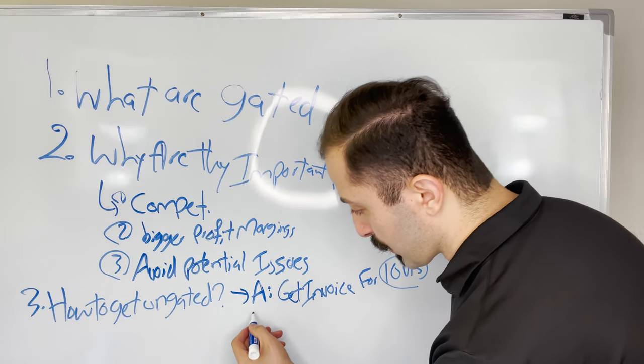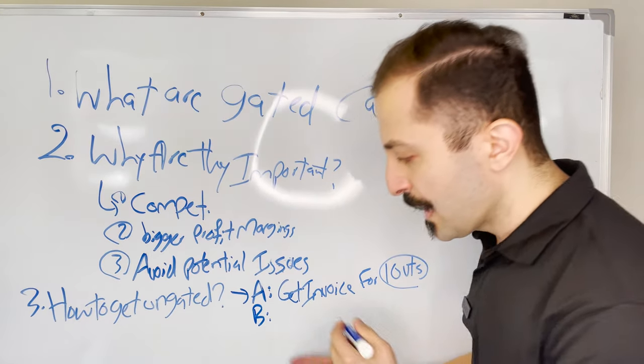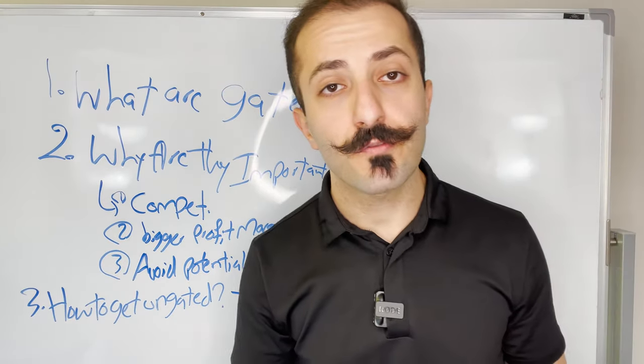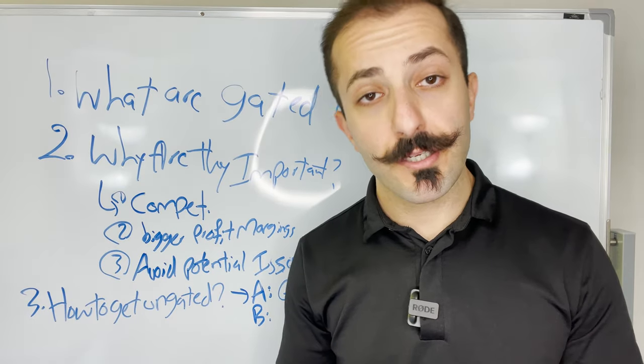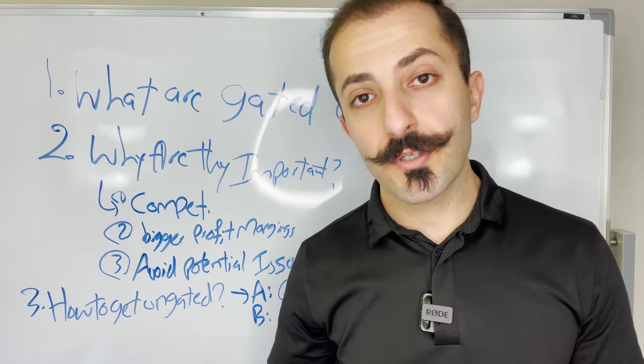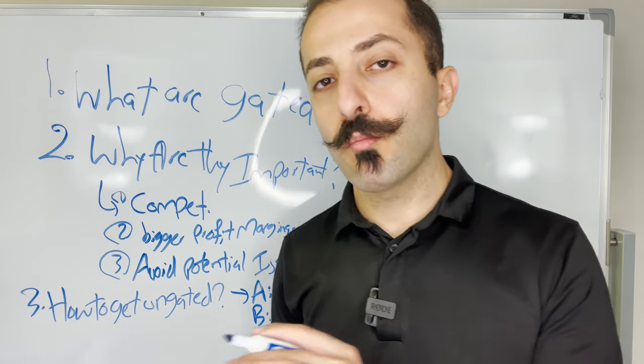Now B category. This is the tougher categories that you need to get ungated for. And those are things like medical supplies, some food products, and other categories that are gated that are a little more difficult.